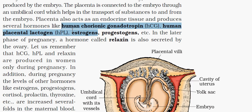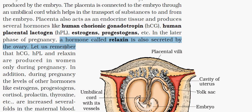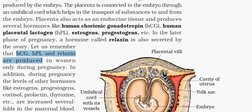HCG, HPL, and relaxin are only produced during pregnancy in a woman. However, levels of estrogen, progesterone, cortisol, prolactin, thyroxin, etc., are increased several-fold in maternal blood because they support fetal growth.